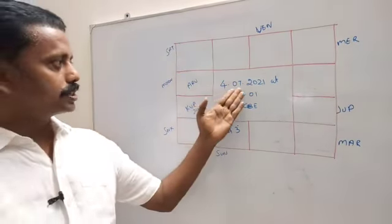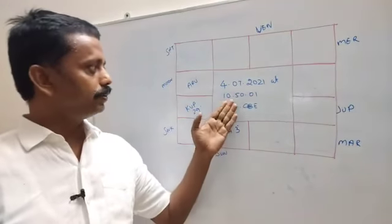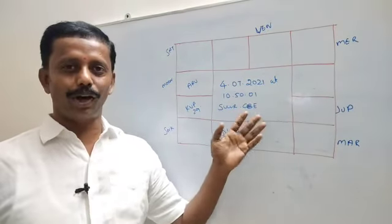On the time 4-7-2021, 10 hours, 50 minutes, 1 second, place Sulur Khoaimathur.